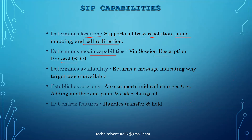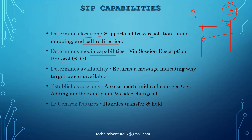Determining availability checks and returns a message indicating why a target is unavailable. If Phone A wants to reach Phone B but Phone B is unavailable, Phone B will send a response indicating it is not available at that time and will explain why — whether it is busy, not reachable, or any other reason — and that will come back in the response.